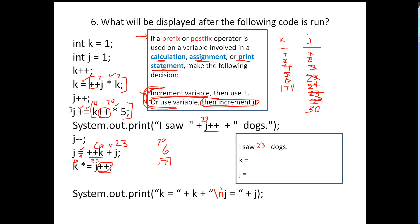Now the print statement — I need you to add a backslash N on yours. Remember, backslash N means press enter, go to the next line. So we print K equals K, and K is equal to 174, then press enter to go to the next line. Then J equals whatever J is, which is 30. That is it for number 6.